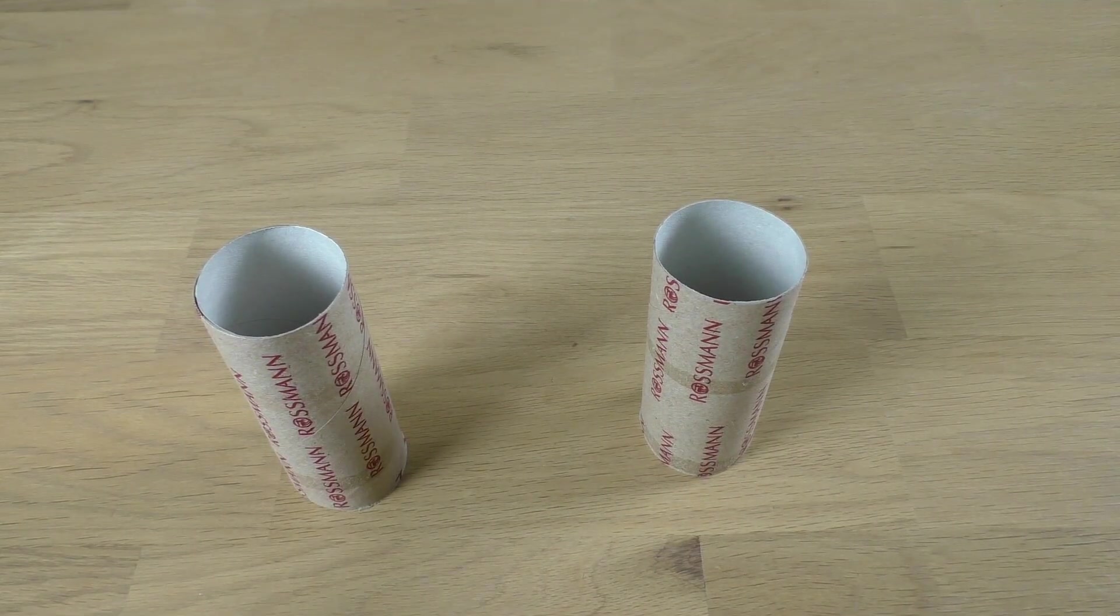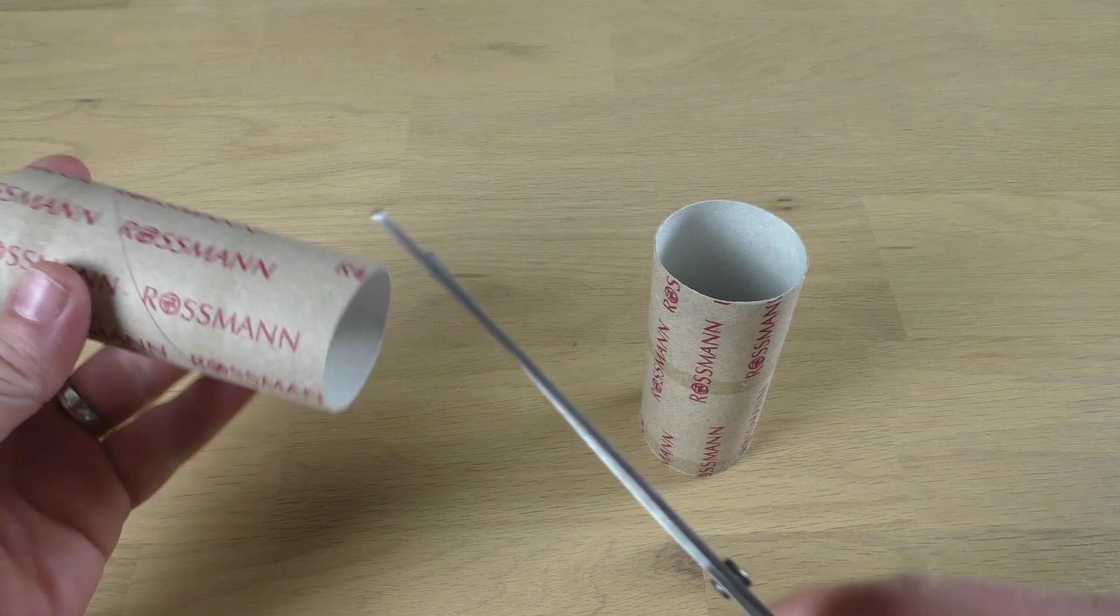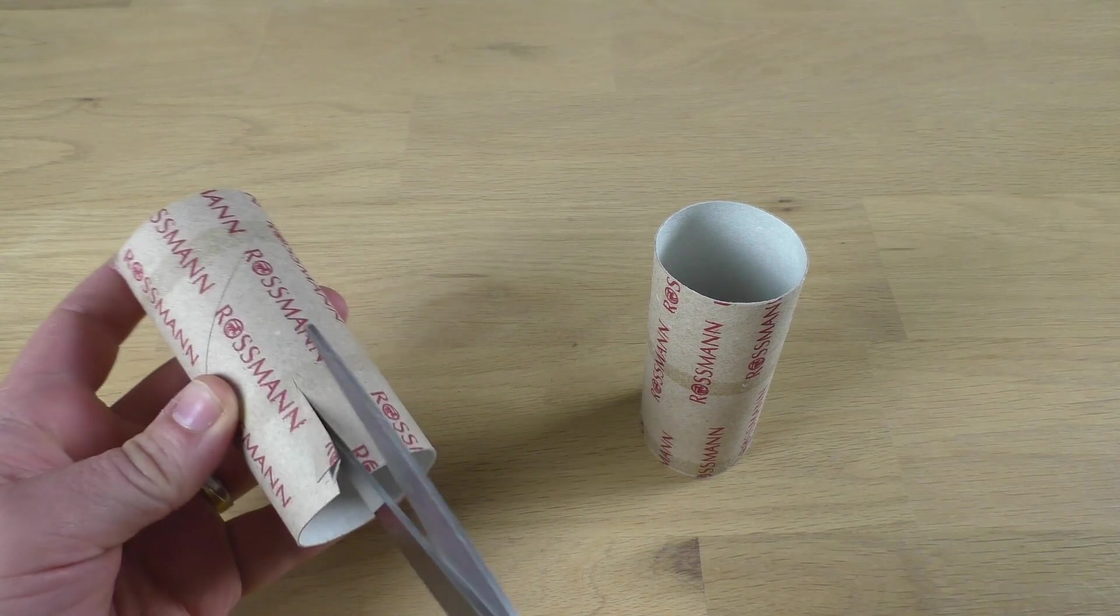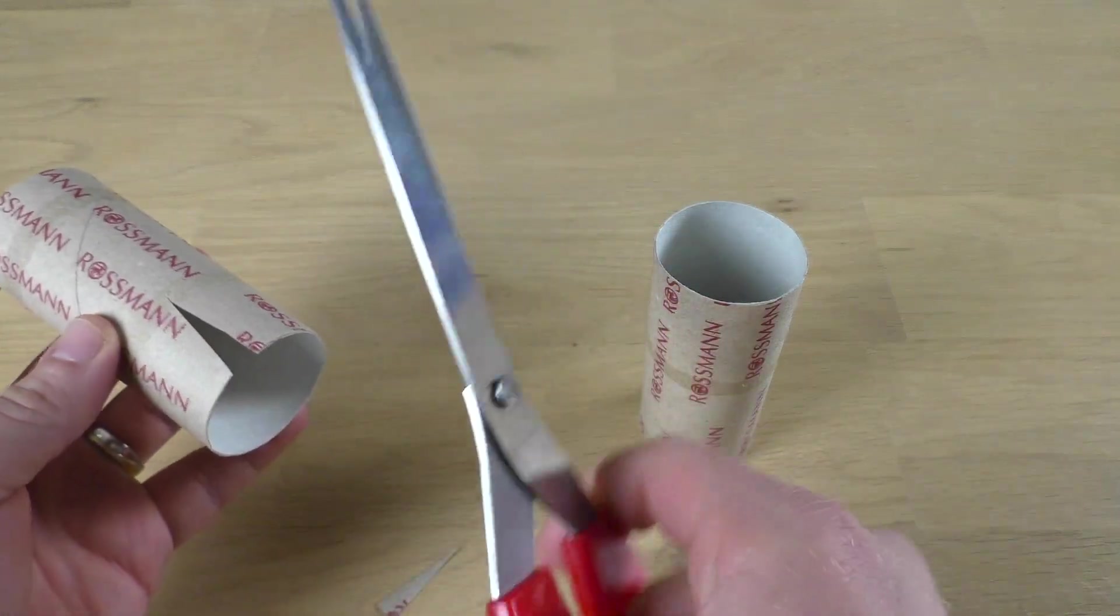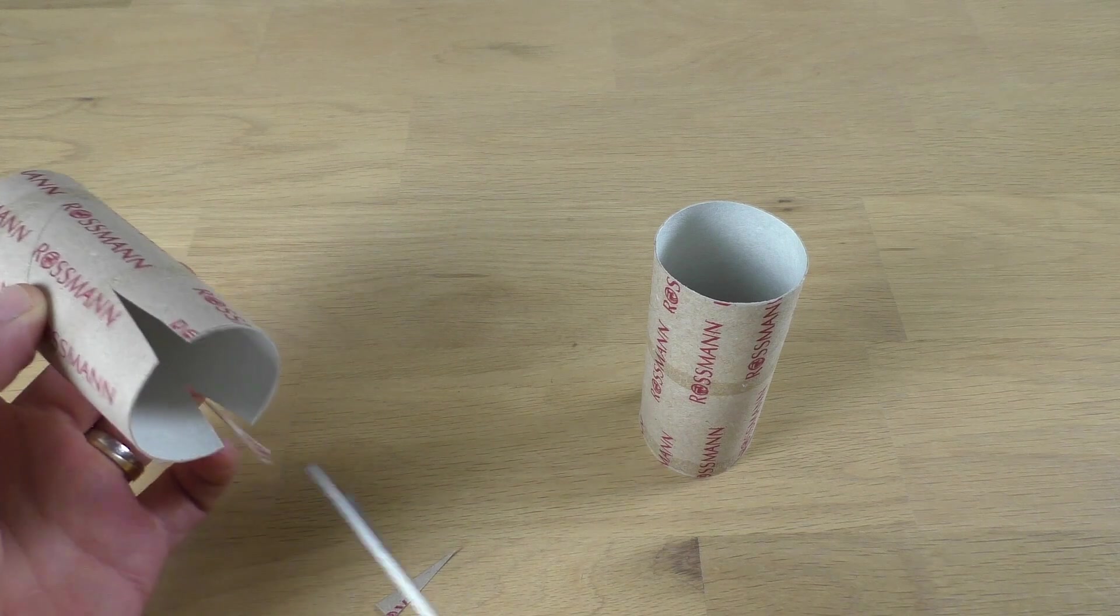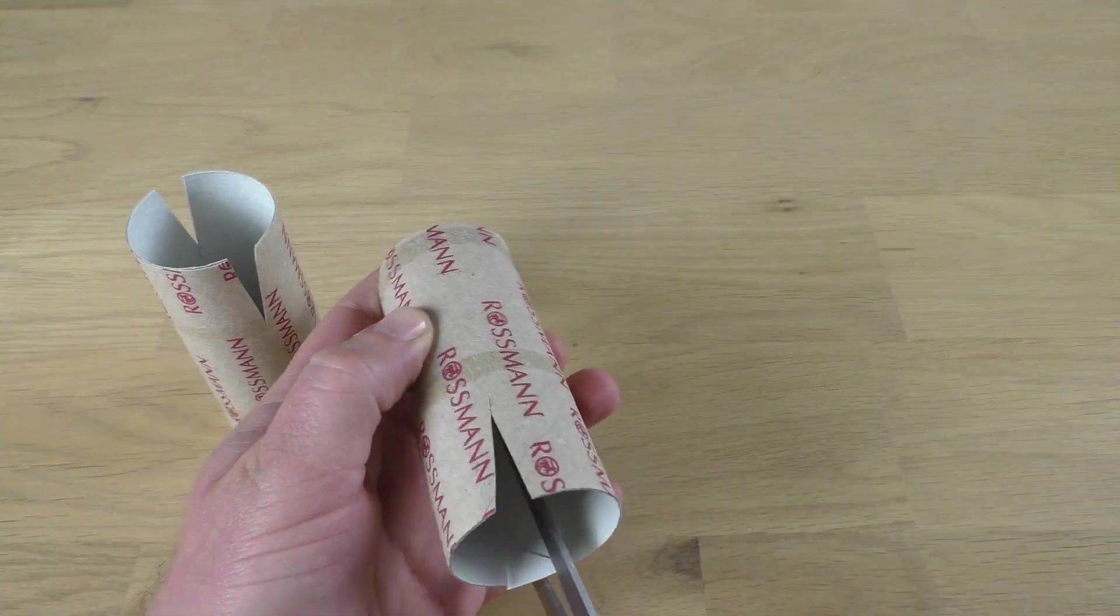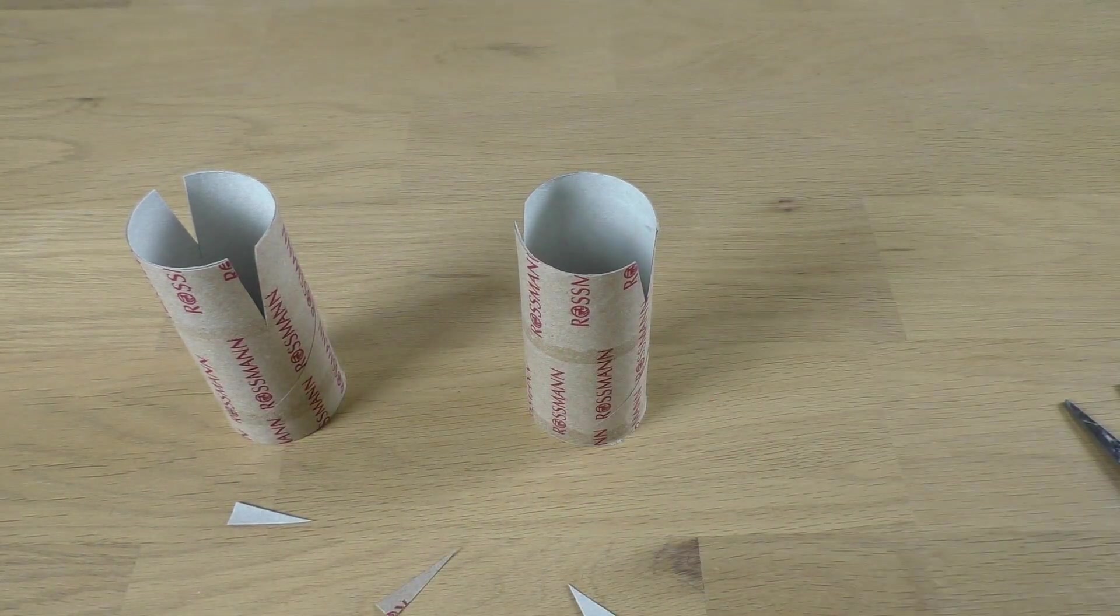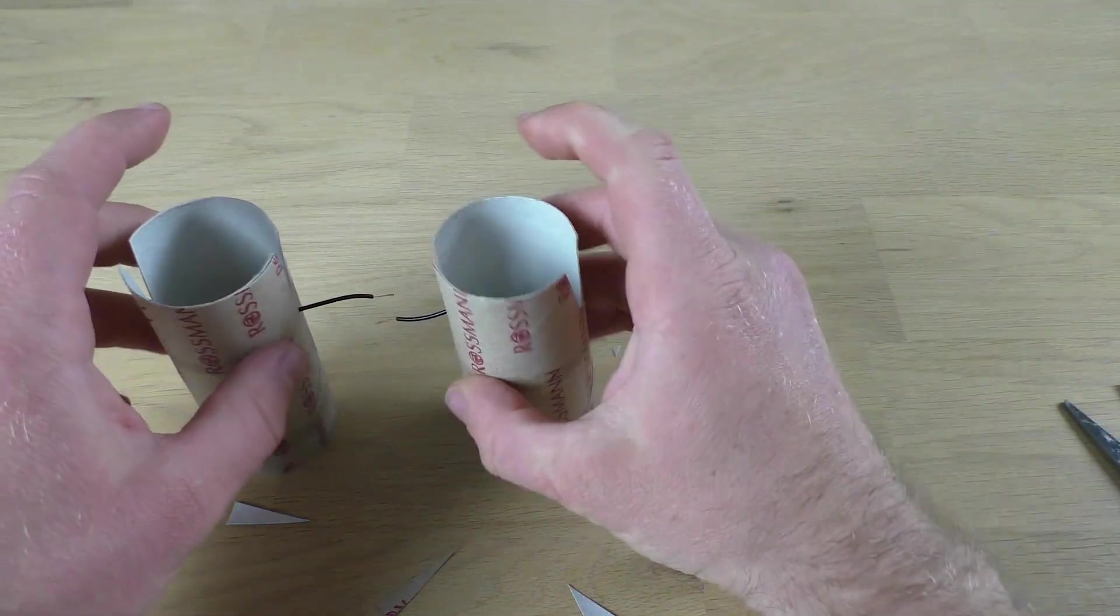Also, having something to hold the wires in place will make your job a lot easier. Actually, anything that can hold a wire will do, like for example two empty paper rolls. Simply use a pair of scissors to make a cut and you're good to go.